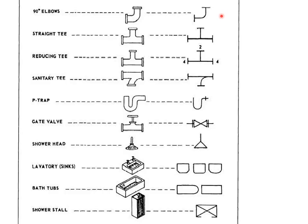Water supply pipes can be connected using certain fittings like elbow, straight T, reducing T, and sanitary T for the sanitary or drainage system. We use P-trap or S-trap in the drainage system. There may be a gate valve in the water supply system. We know the shower head, the lavatory and the taps, the bathtubs and shower stalls.